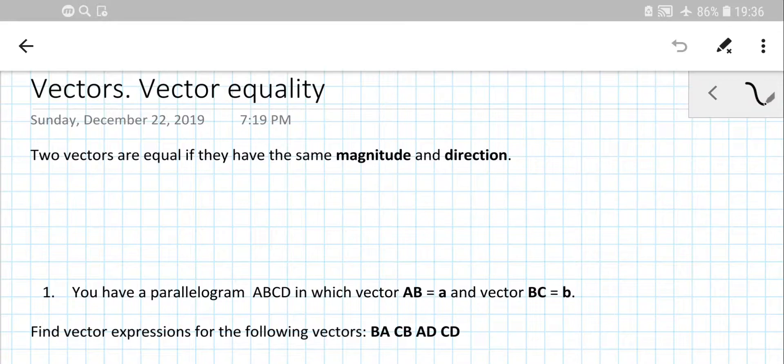So here we consider two vectors a and b and we figure out whether they're equal or not. So the statement tells us that two vectors, no matter which direction they have, but the direction for both should be the same.